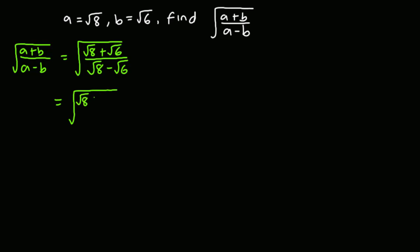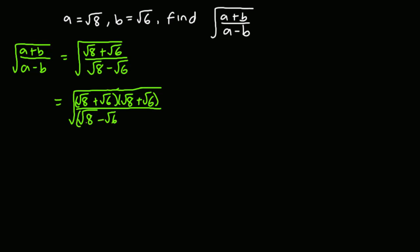(√8 + √6) multiplied by the conjugate (√8 + √6), all divided by (√8 − √6) also multiplied by (√8 + √6).